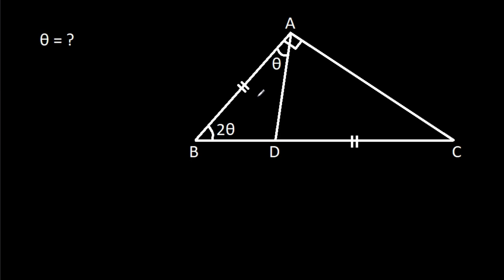In this video, we have been given that angle BAC is 90 degrees, angle BAD is theta, angle ABD is 2 theta, and AB is equal to CD. We have to find theta.